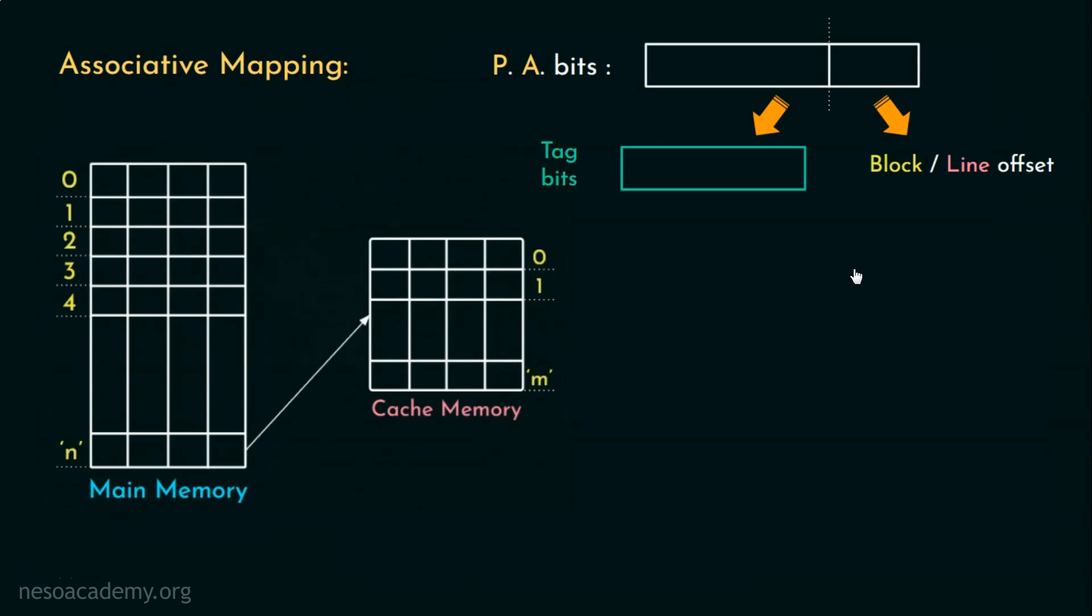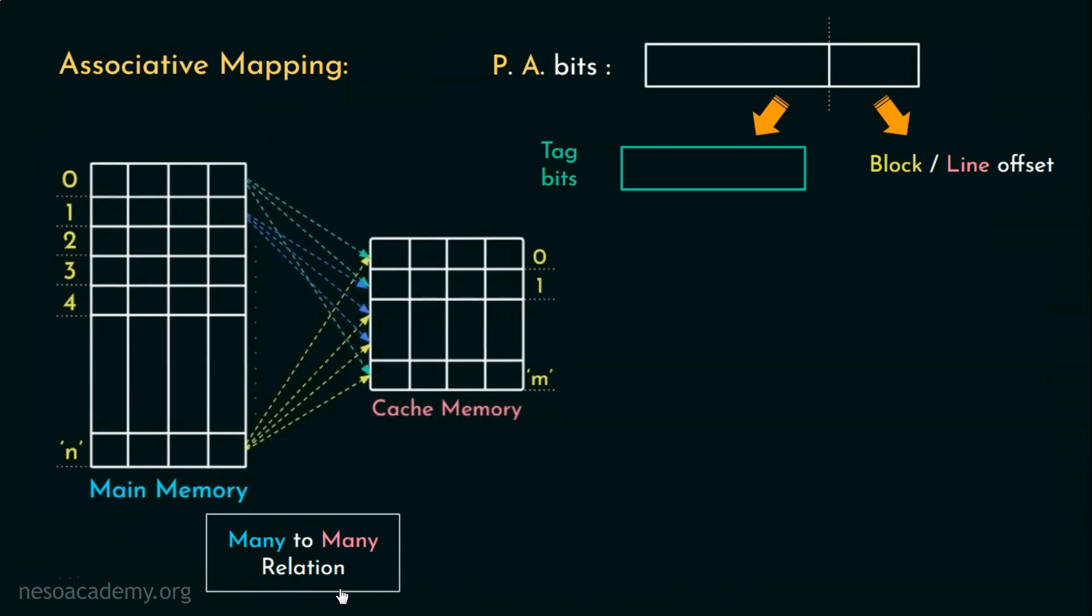However, this leads to another disadvantage. As associative mapping follows many-to-many relationship, there is no clue where a particular memory block is placed inside the cache. During retrieval, all the tags associated to all the cache lines are judged to find out the required block. This is going to increase the hit latency.